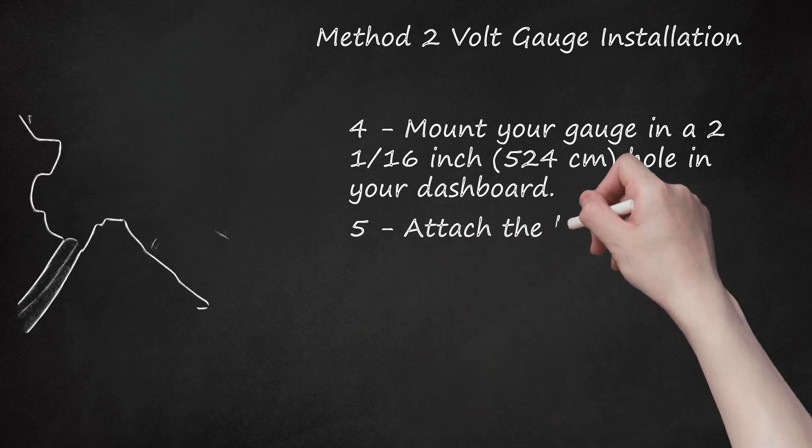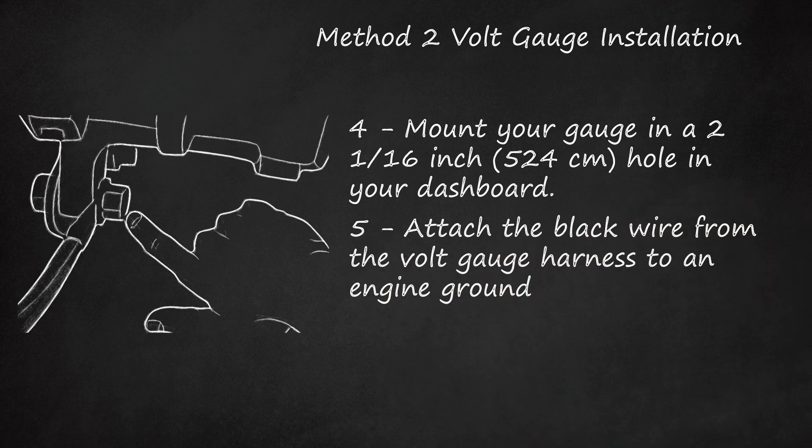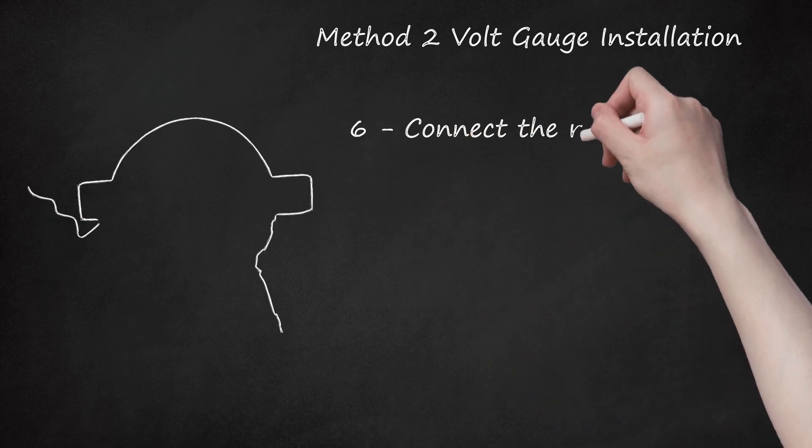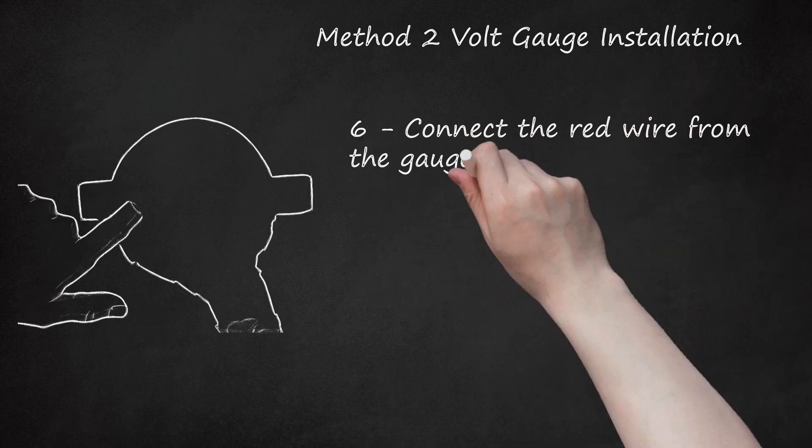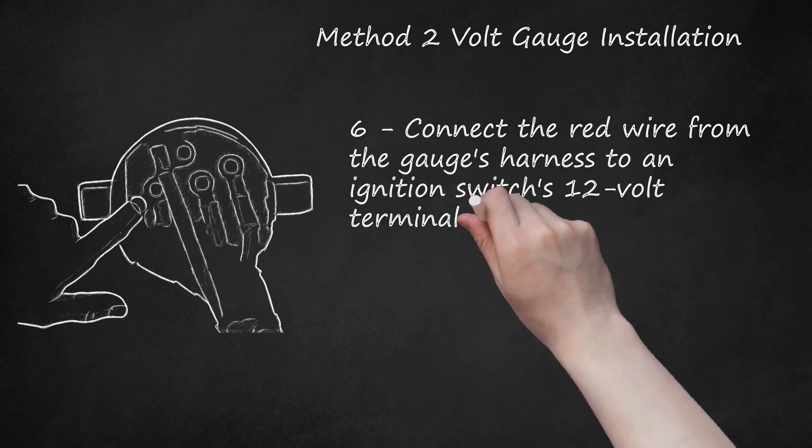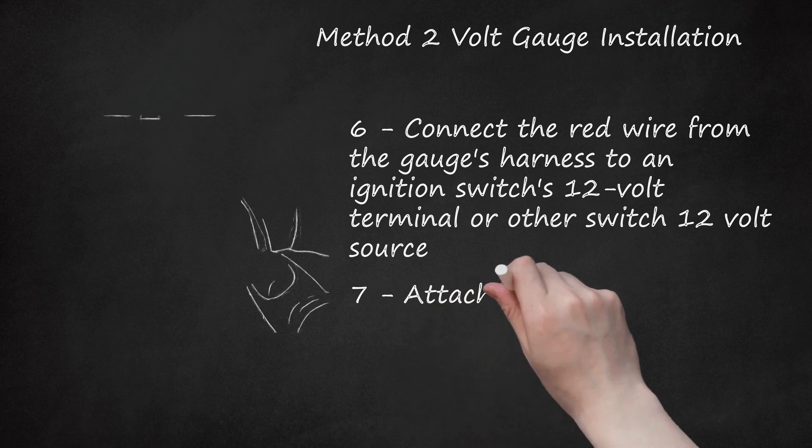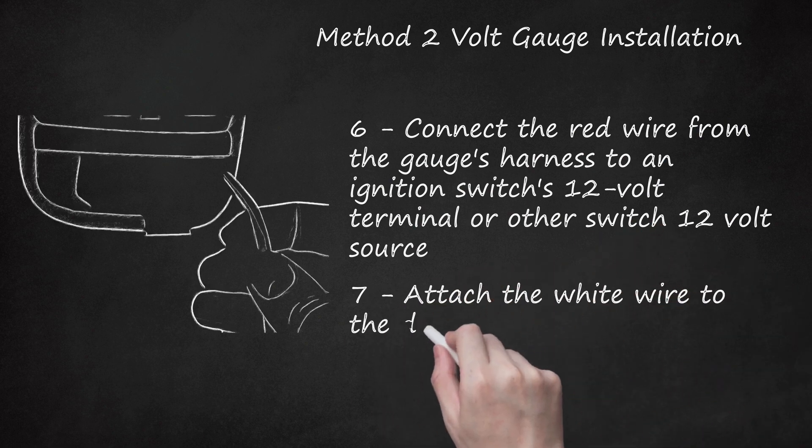Step 5: Attach the black wire from the volt gauge harness to an engine ground. Step 6: Connect the red wire from the gauge's harness to an ignition switch's 12-volt terminal or other switch's 12-volt source. Step 7: Attach the white wire to the dash lighting panel.